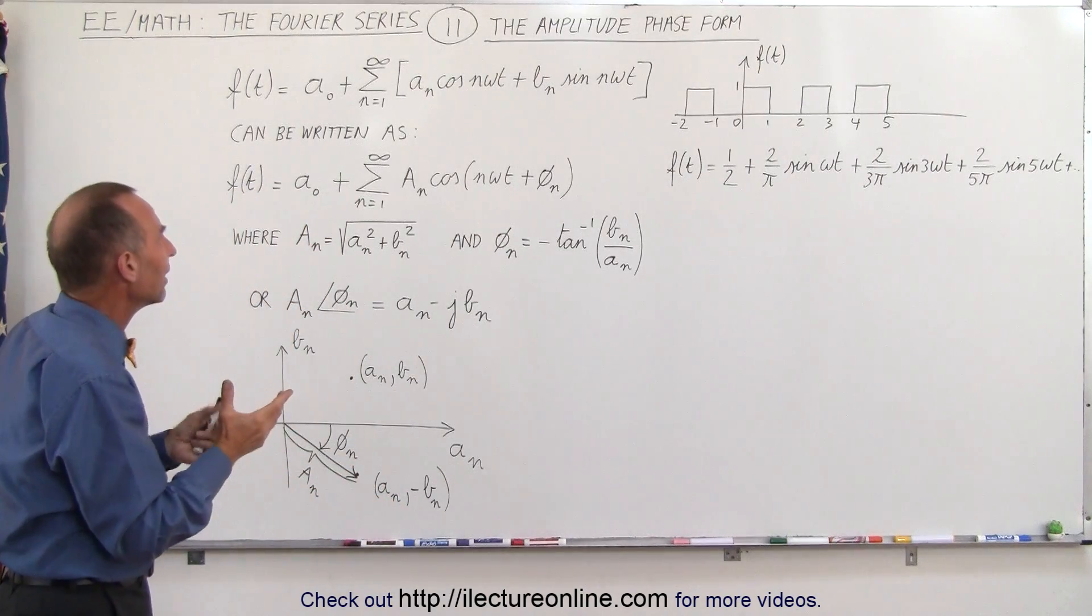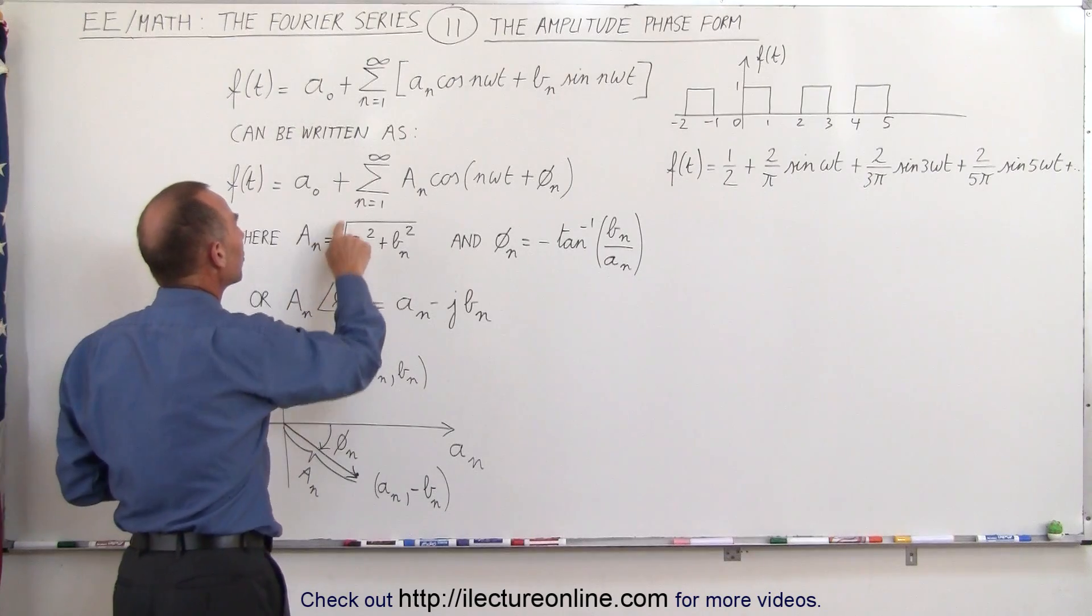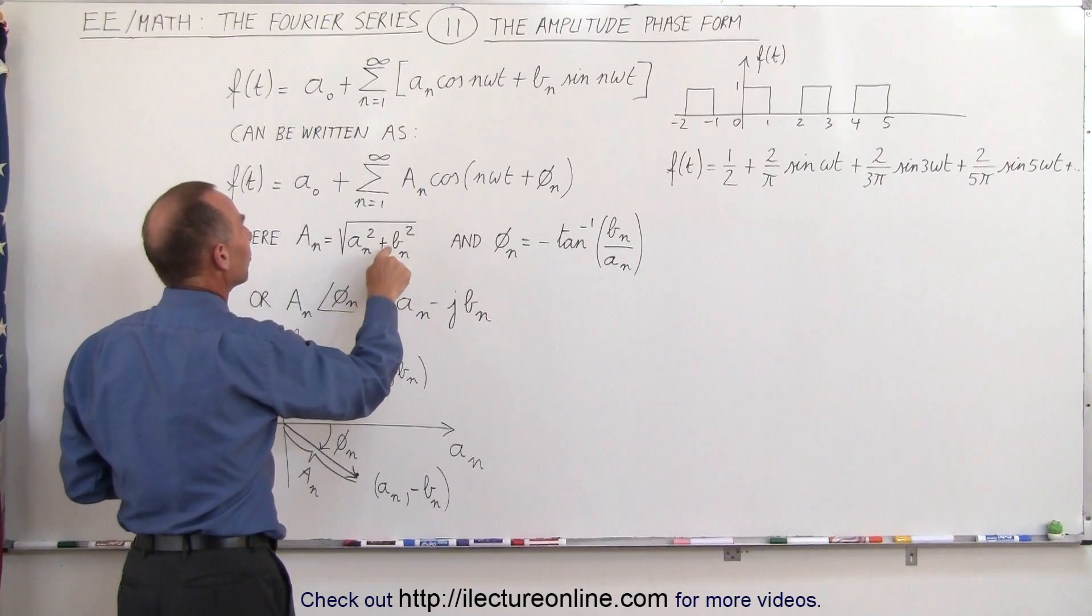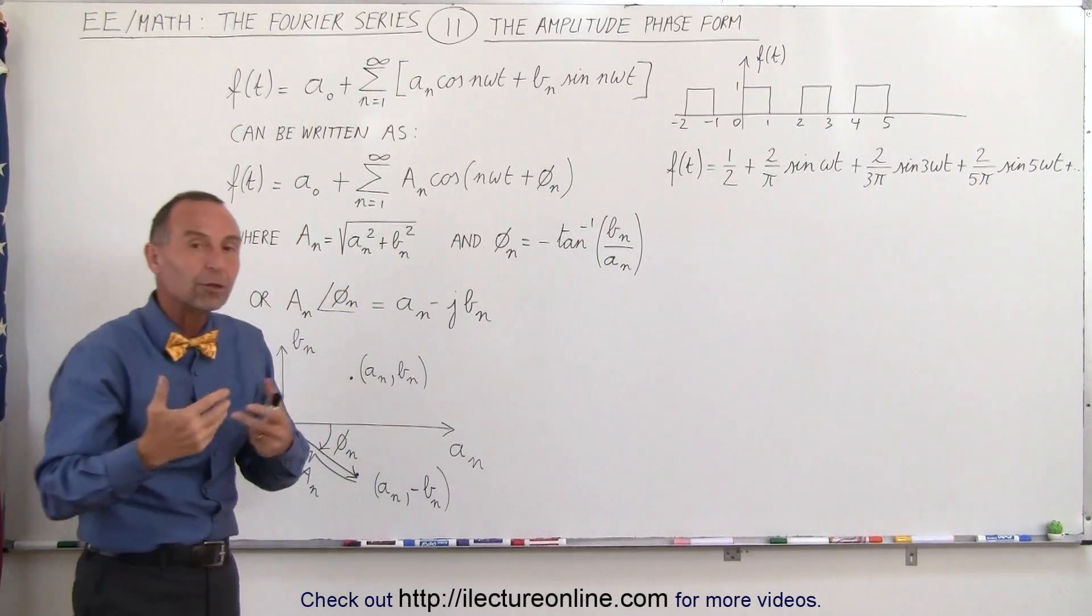Well, the best way to understand it is that a sub-n is simply the square root of a sub-n squared plus b sub-n squared, so it's really using the Pythagorean theorem.